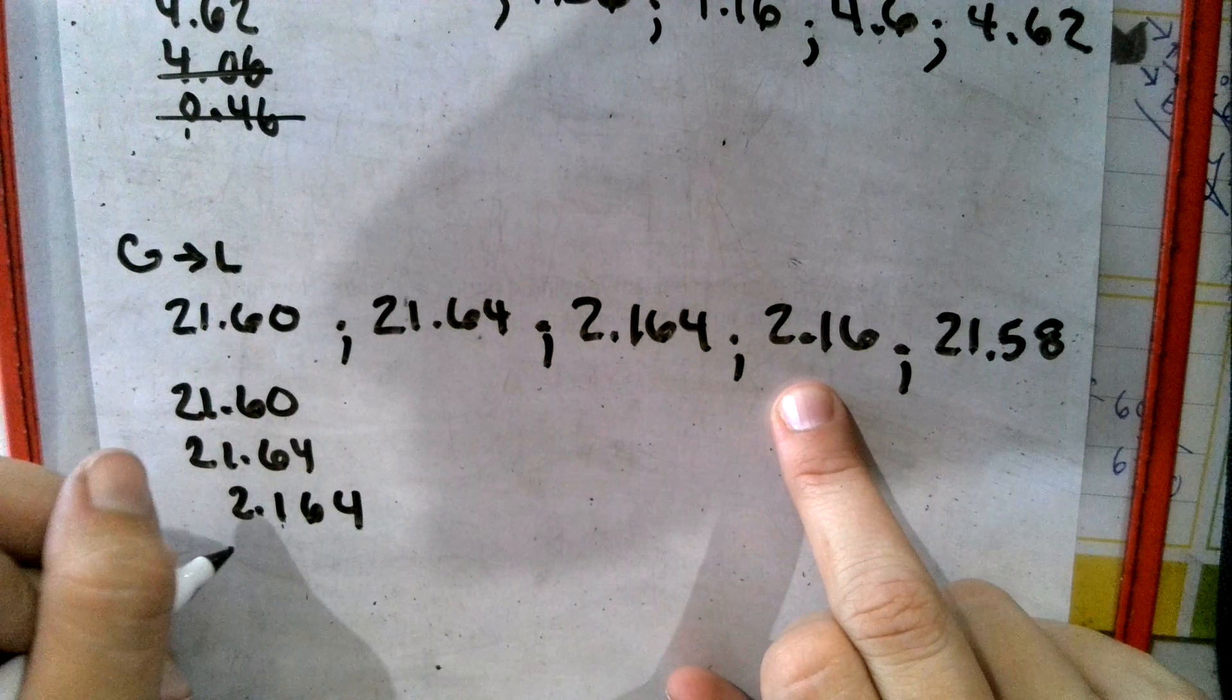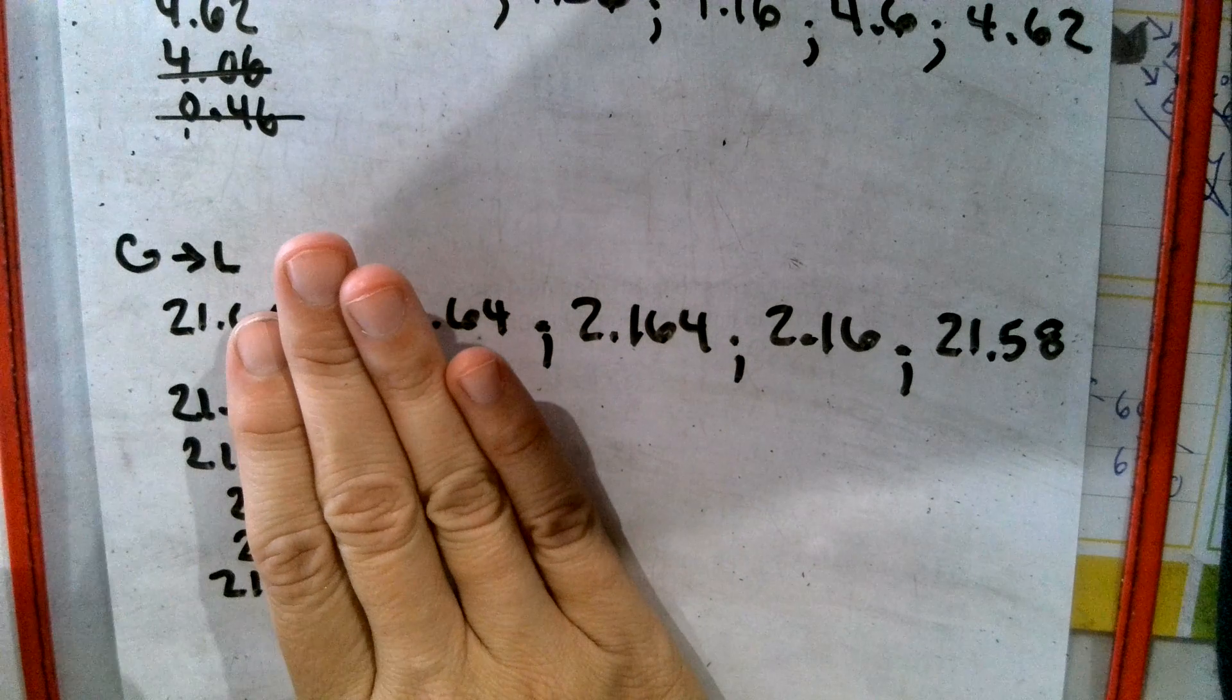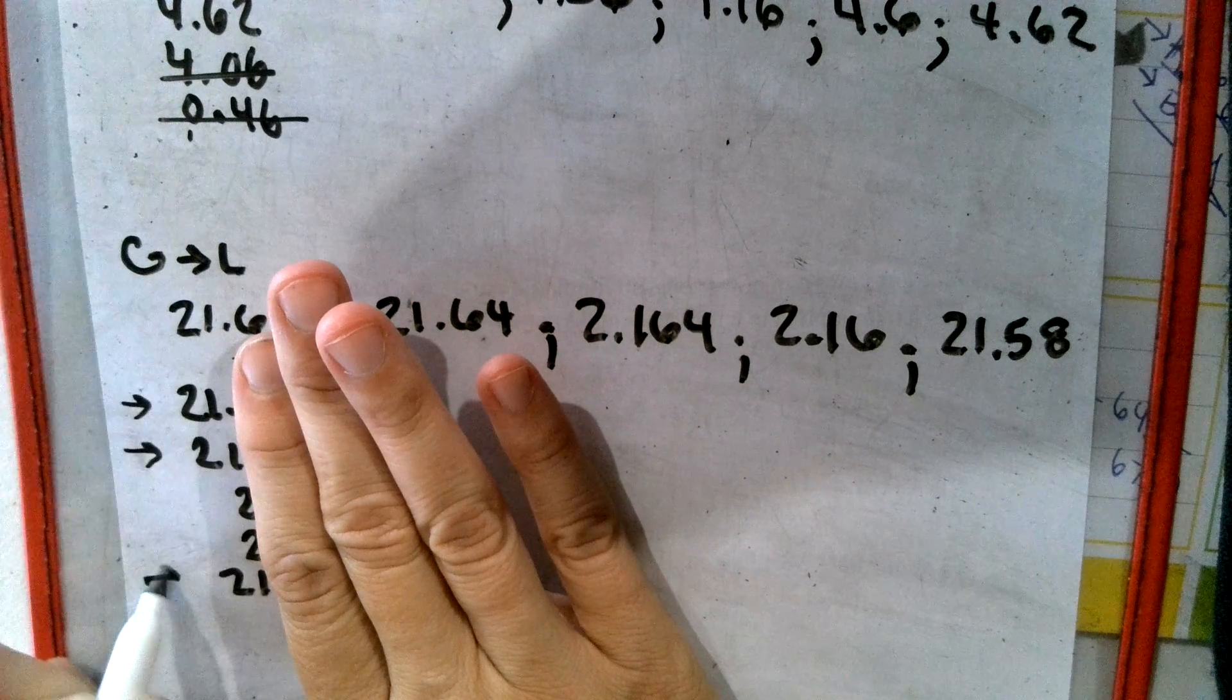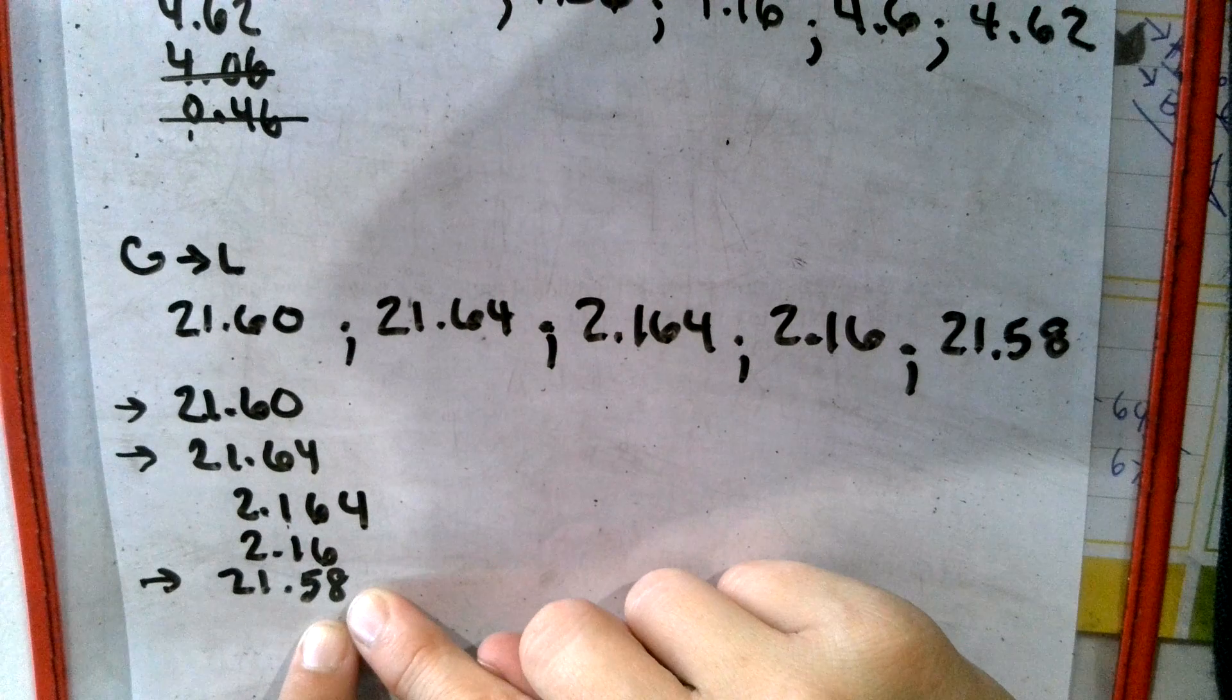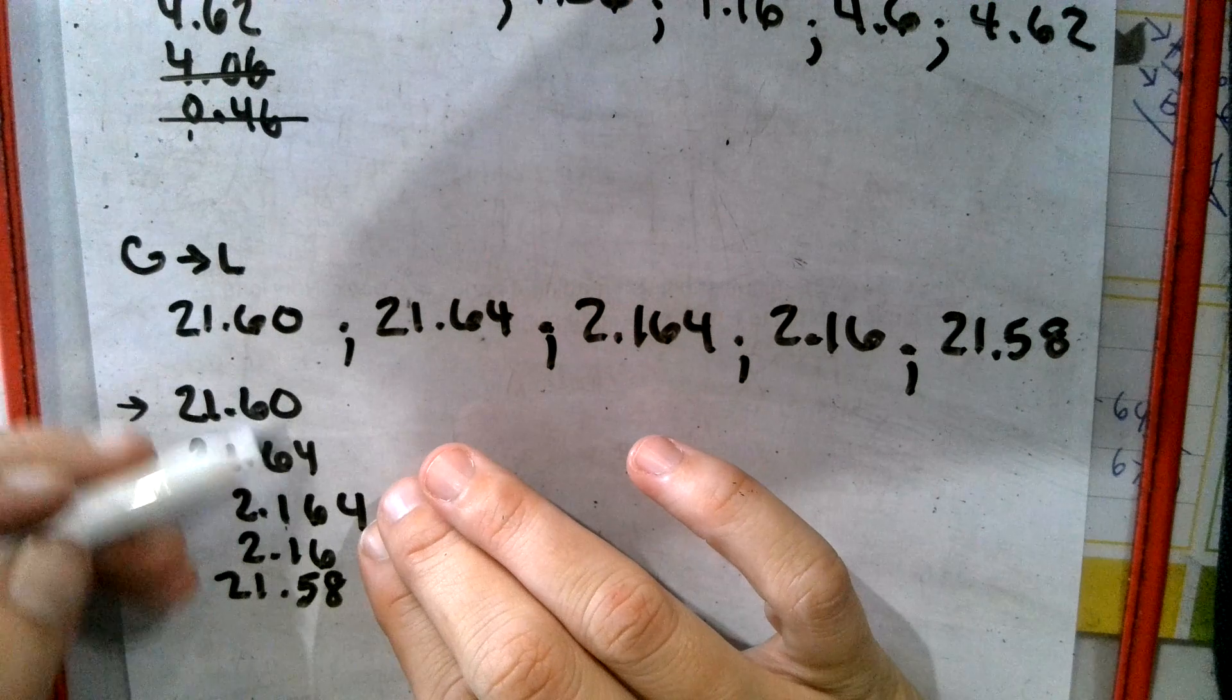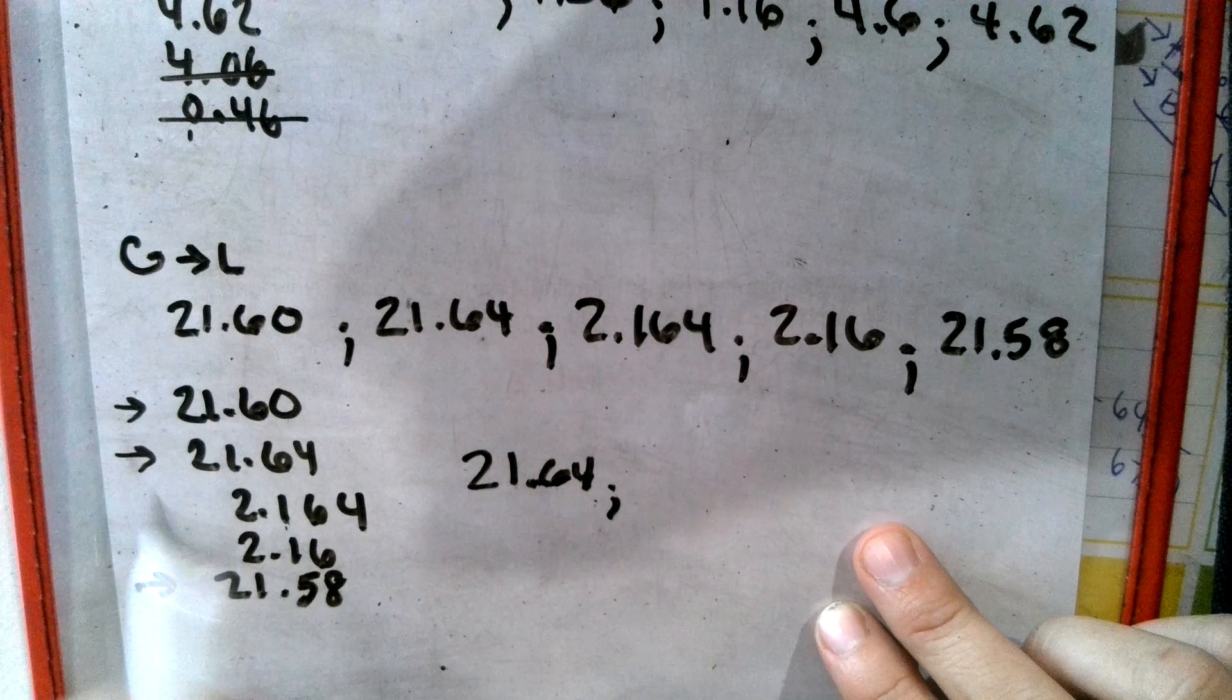Remember, this method is greatest to least. So we're looking for our biggest over here. So we've got 21, 21, and 21. So those are our biggest. So we're looking here, here, and here. So we have 21.60, 21.64, and 21.58. So we look at our next digit, 6, 6, 5. The 6s are bigger. So we go to the next digit, 0, 4. The 4 is biggest. So 21.64 hundredths. Okay, so then that one's gone.